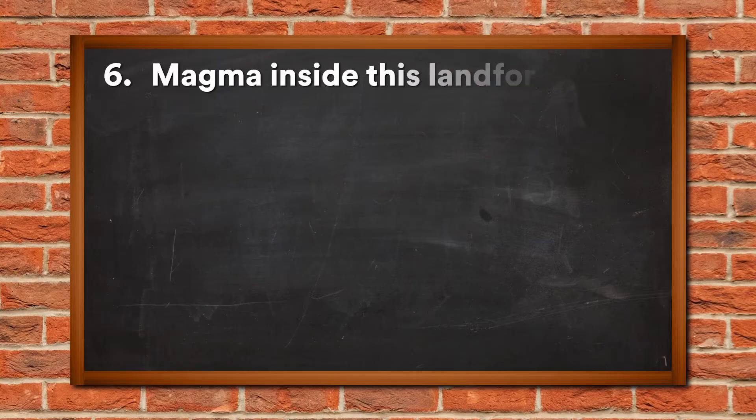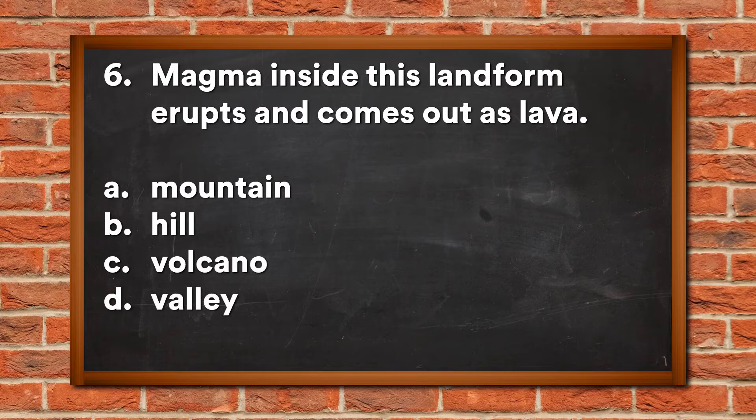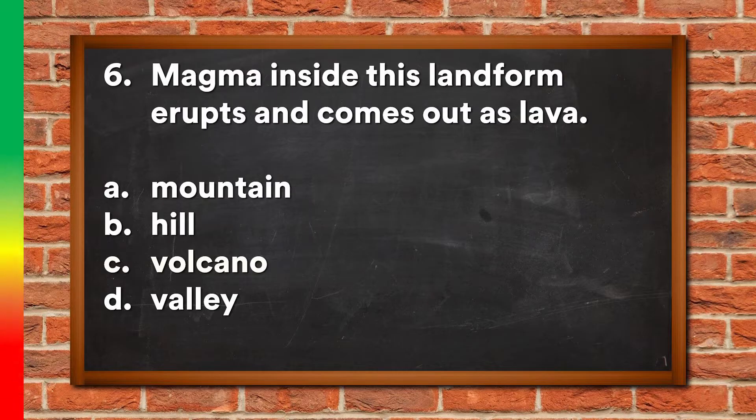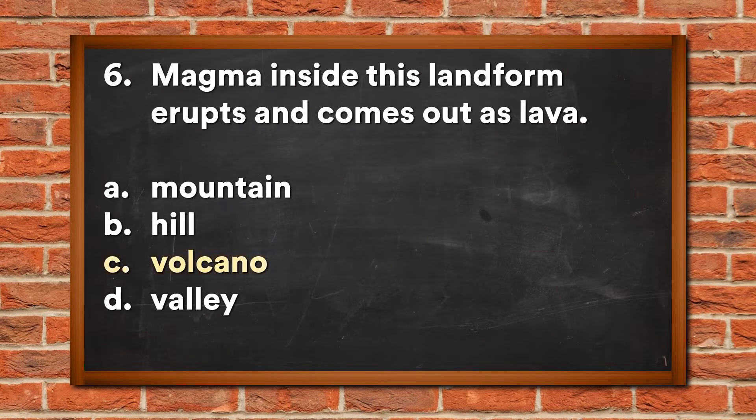Question 6: Magma inside this landform erupts and comes out as lava. A. Mountain, B. Hill, C. Volcano, D. Valley. The answer is C, Volcano.